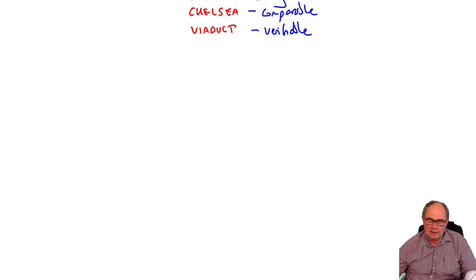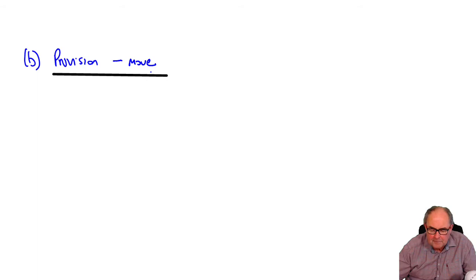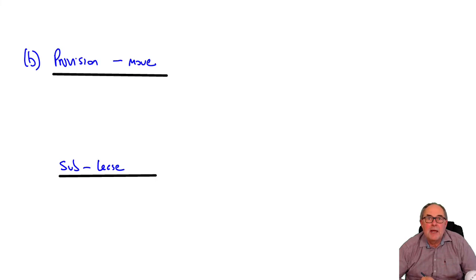So in particular, in part B, first of all for six marks, we were asked to comment on a provision in respect of the provision for the move, and also to think about a sublease. I think three separate occasions in the same exam they're testing your knowledge of provisions, because this standard is so much bread and butter. The key message under the general provision is that you cannot make a provision for operating losses. You just can't.